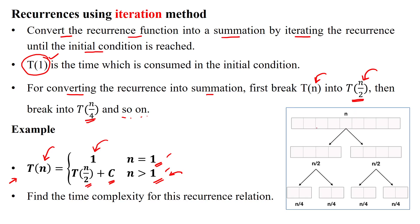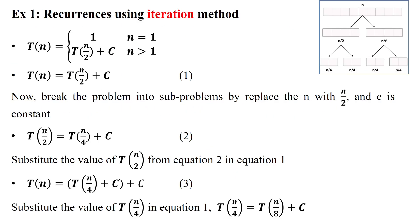We have to convert the given problem from n into n/2, then n/2 into n/4, until T of 1. We take equation: T(n) = T(n/2) + c, using the condition where n is greater than 1. Now we break this problem into sub-problems as per the recursive calls, replacing the bigger problem with the smaller problem n/2. Here c is the constant.